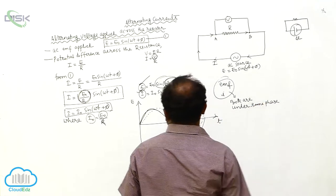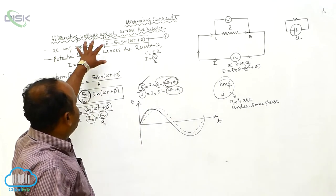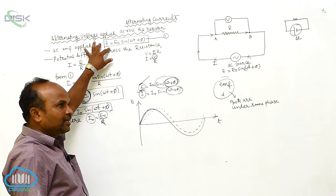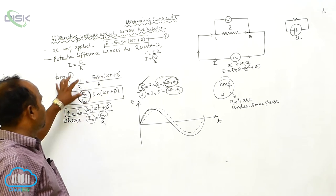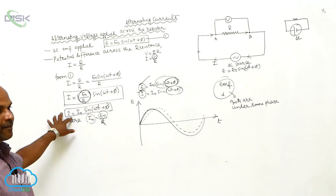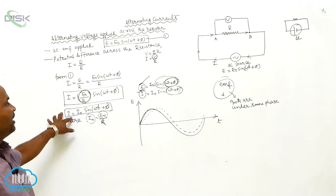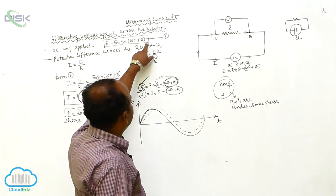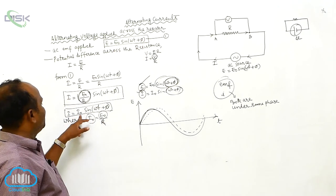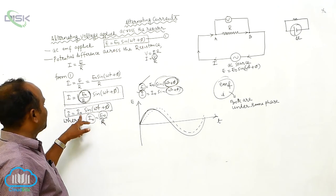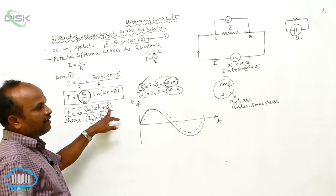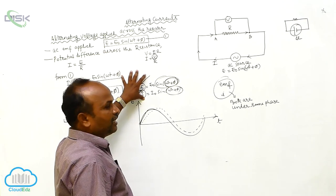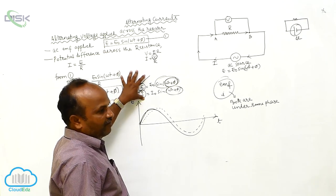Whenever AC EMF is applied to the resistor, then the AC current expression is: E equals E₀ sin(ωt + π), and I equals I₀ sin(ωt + π). From this, both are under the same phase.